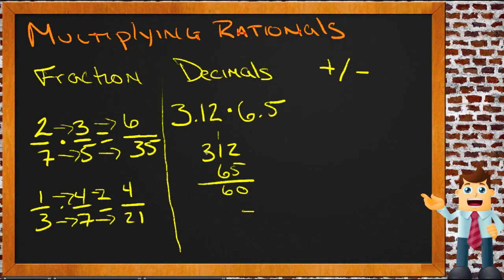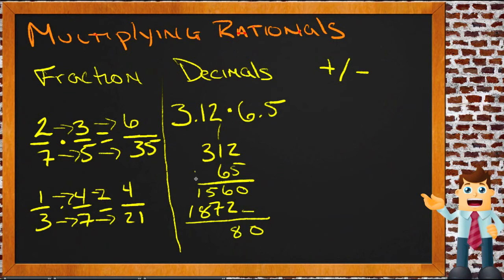Working through 312 times 65: 5 times 2 is 10, 5 times 1 is 5 plus 1 is 6, 5 times 3 is 15. Skip a space, then 6 times 2 is 12, 6 times 1 is 6 plus 1 is 7, 6 times 3 is 18. Adding straight down: 0, 8, 12, 10, 2.